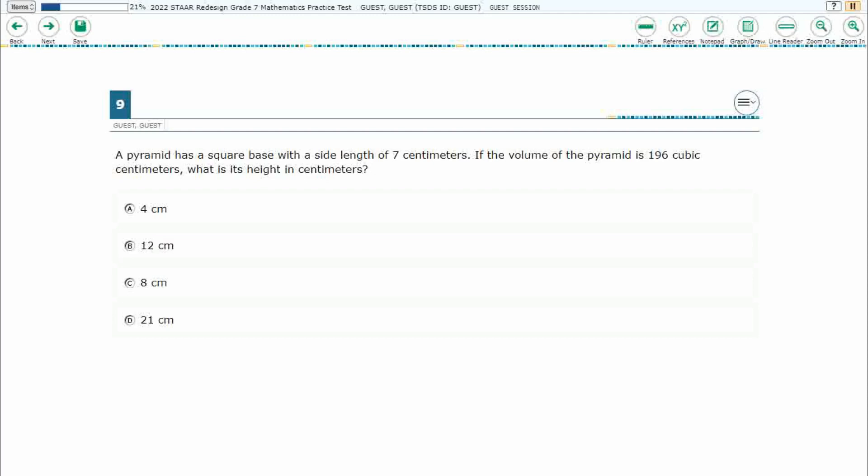So, we have a pyramid here, square base, side length of 7 cm, volume is 196 cubic cm, so I need to find the height. Well, what do we know about volume of a pyramid?